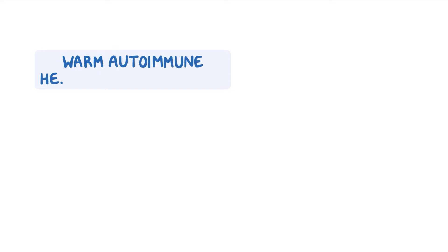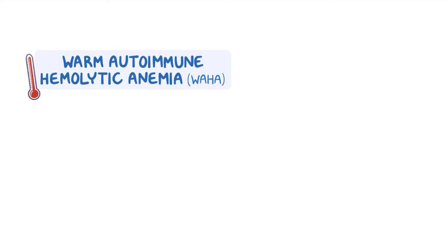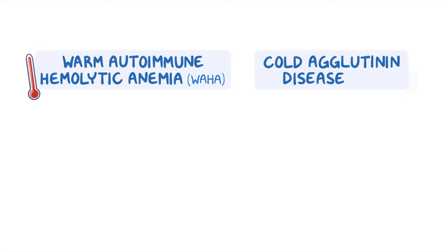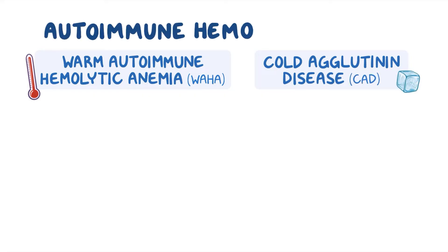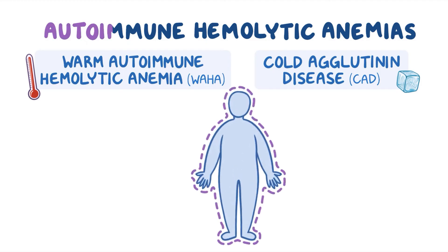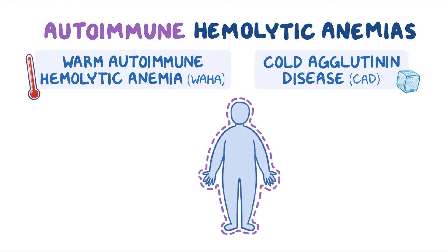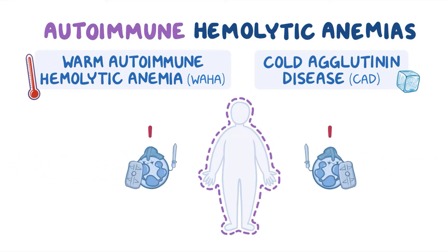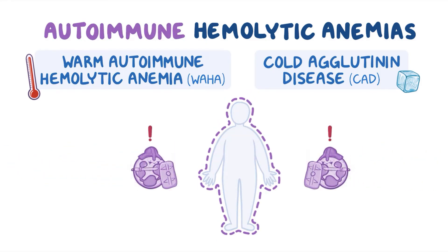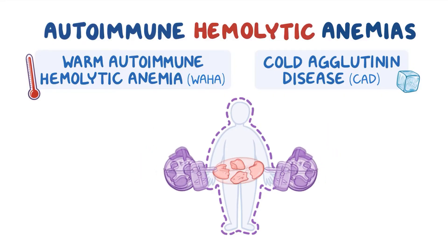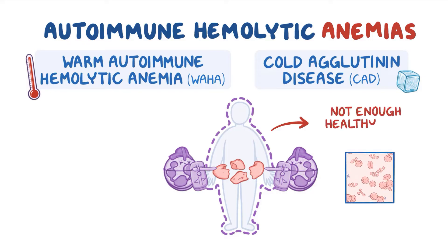Warm autoimmune hemolytic anemia, also called WAHA, and cold agglutinin disease, also called CAD, are autoimmune hemolytic anemias. Autoimmune refers to when the body's immune system mistakenly attacks and destroys healthy cells, hemolytic refers to the destruction of red blood cells, and anemia refers to when the blood does not contain enough healthy red blood cells.